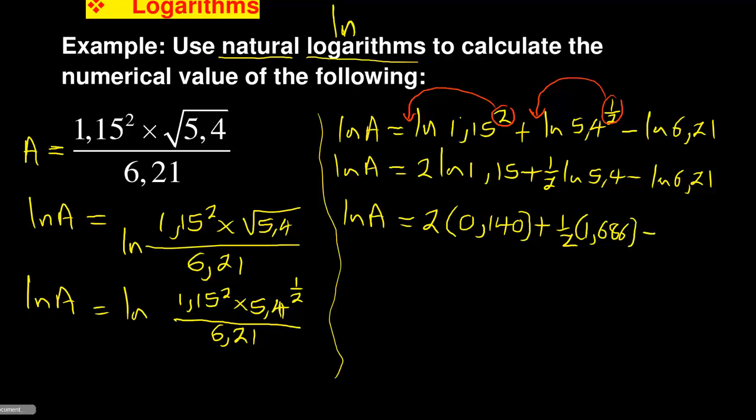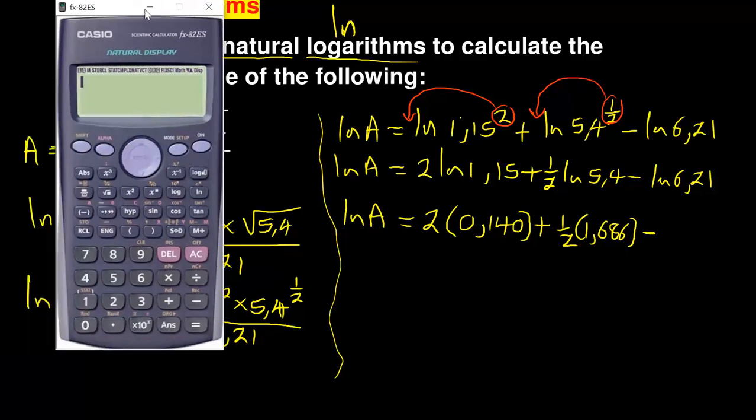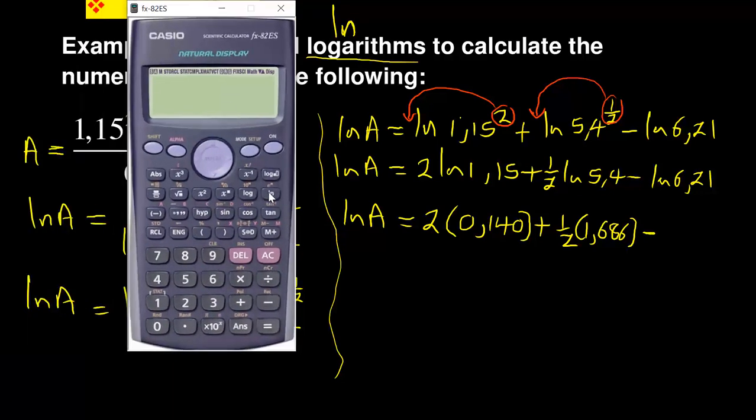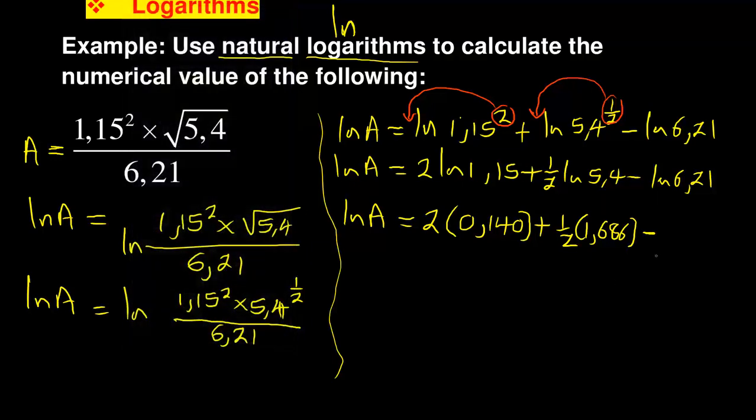And then minus, and then lastly it's ln 6.21. And again shift, setup, 6, you're rounding off to 3 decimal places: 1.826. So this is now what you're having. The next thing - remember they said use natural logarithm to calculate the numerical value.